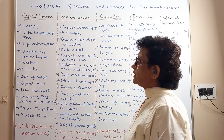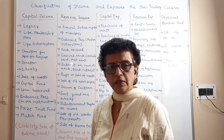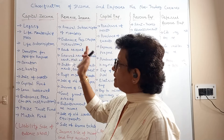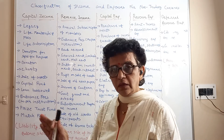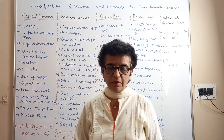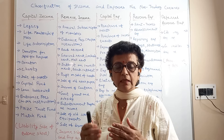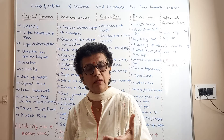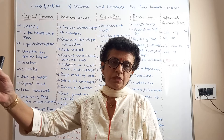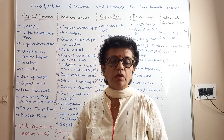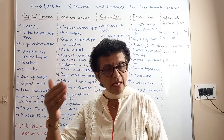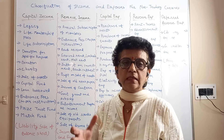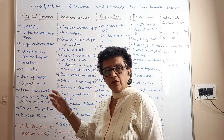The very first broad classification is capital income. In the first chapter of our accountancy we learned capital income, capital expense, revenue income, and revenue expense — the same applies here. Capital income is the income which is not regular. The income which you receive once in a while — the income you get as a gift or benefit, donated by somebody as a legacy.